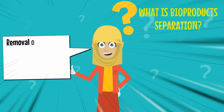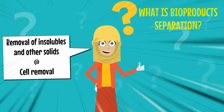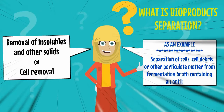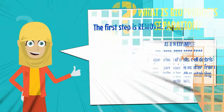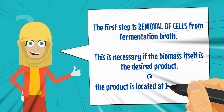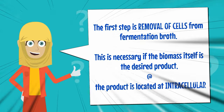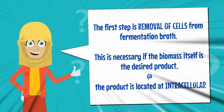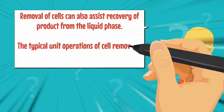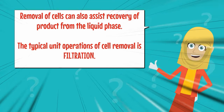Separation of Bioproducts, also known as removal of insolubles and other solids, or cell removal. The first step is removal of cells from fermentation broth. This is necessary if the biomass itself is the desired product, or the product is located intracellularly. Removal of cells can also assist recovery of product from the liquid phase. The typical unit operation of cell removal is filtration.